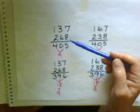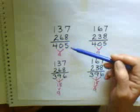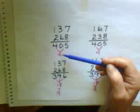So I played with a few equations and I came up with 1, 3, 7 plus 2, 6, 8 equaled 4, 0, 5, which, casting out 9s, we know equals 9.